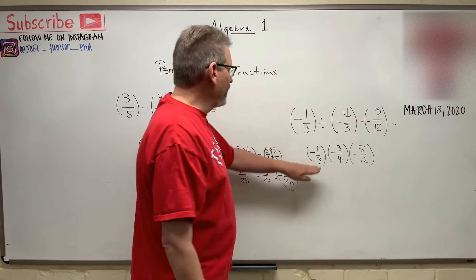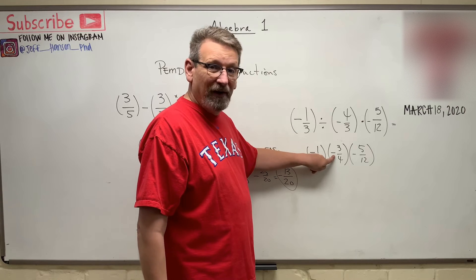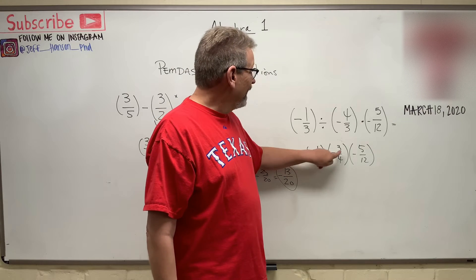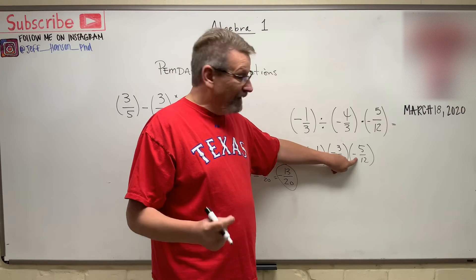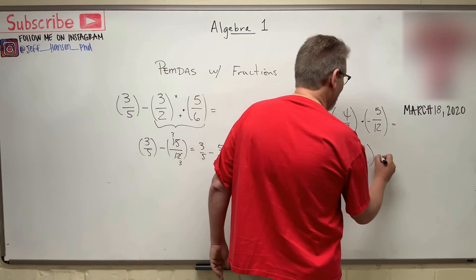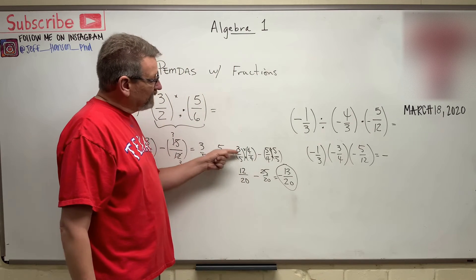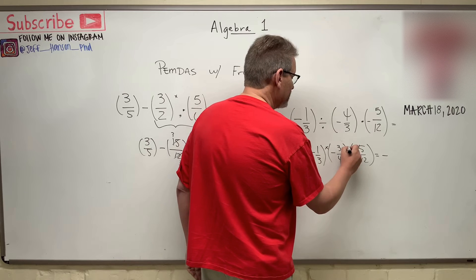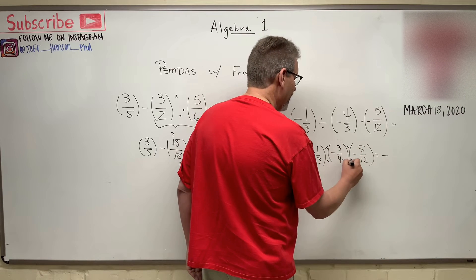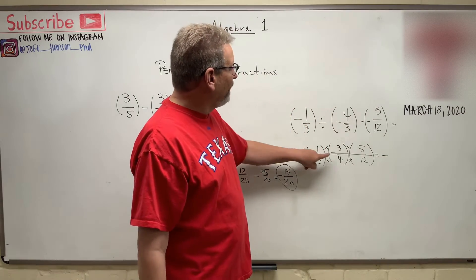Now I have three negatives here. A negative times a negative gives me a positive, and then I multiply that positive one more time by another negative, giving me a negative again. So I'm going to have a negative answer, and just like we did over here, we multiply the top and the bottom together. You can make one big long line out of that.